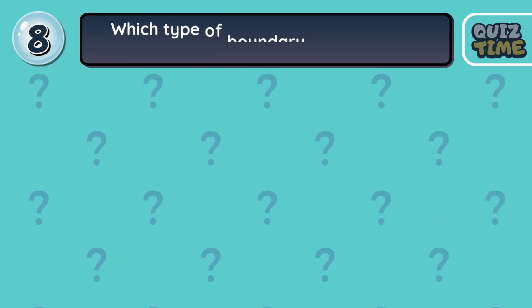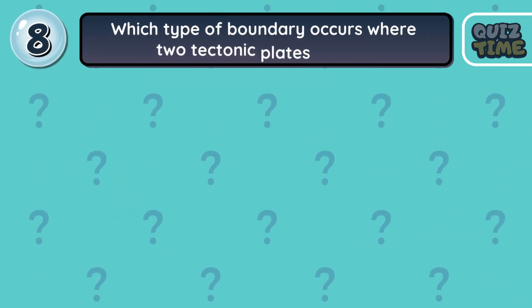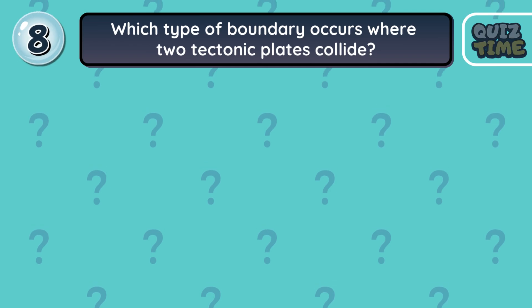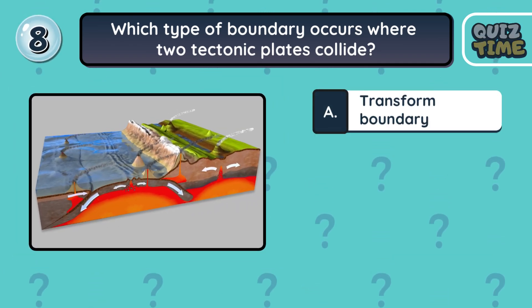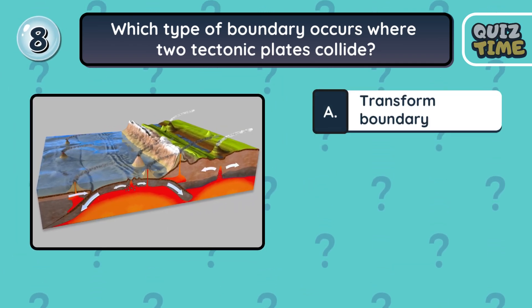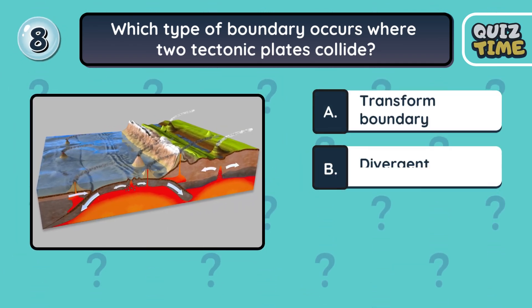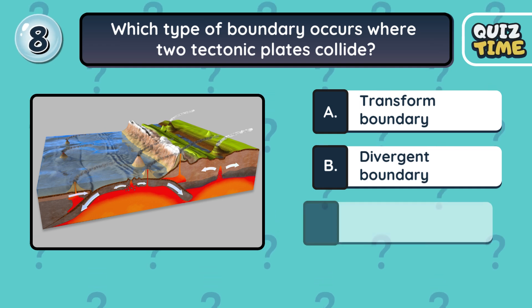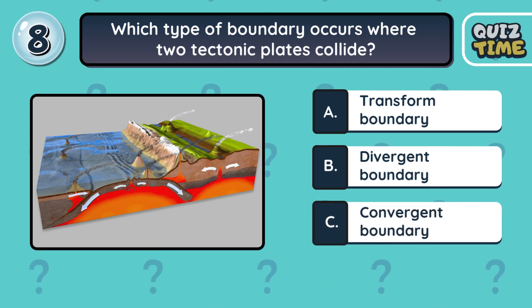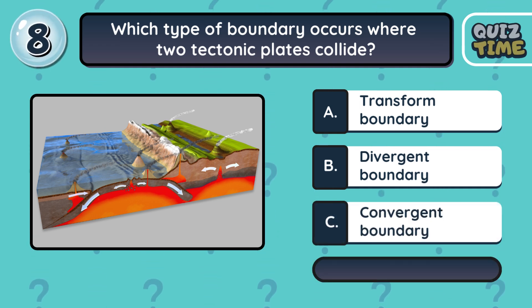Number 8. Which type of boundary occurs where two tectonic plates collide? A. Transform boundary. B. Divergent boundary. C. Convergent boundary.